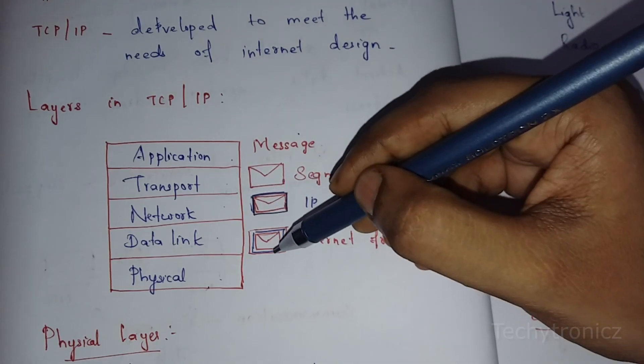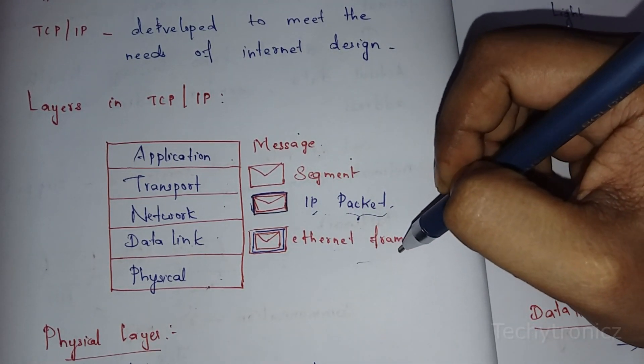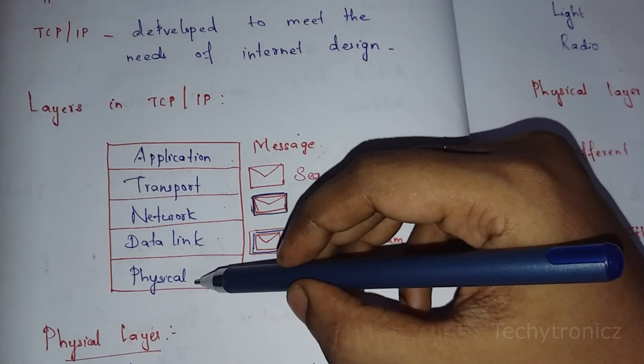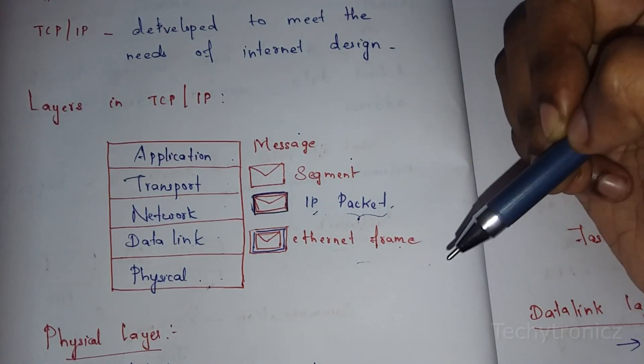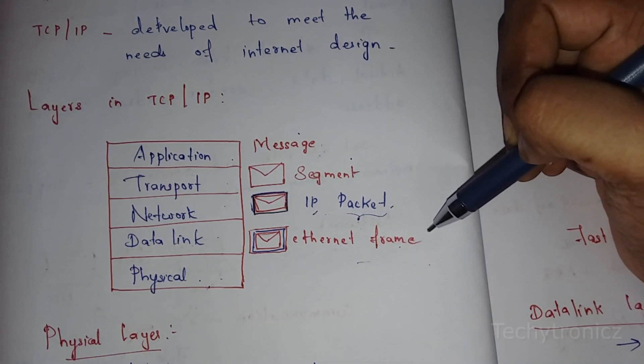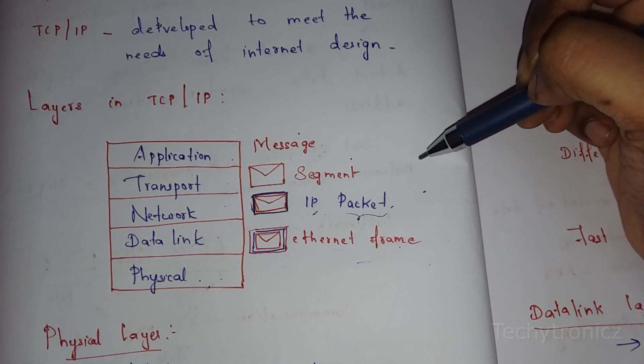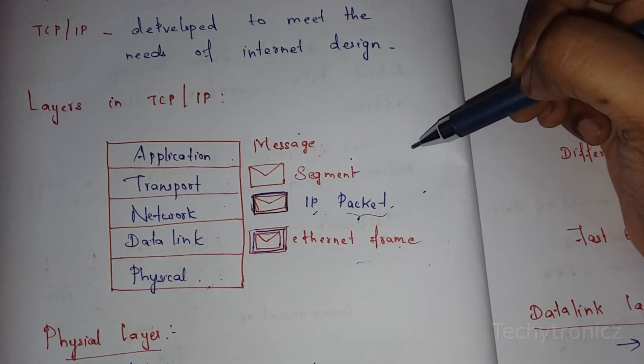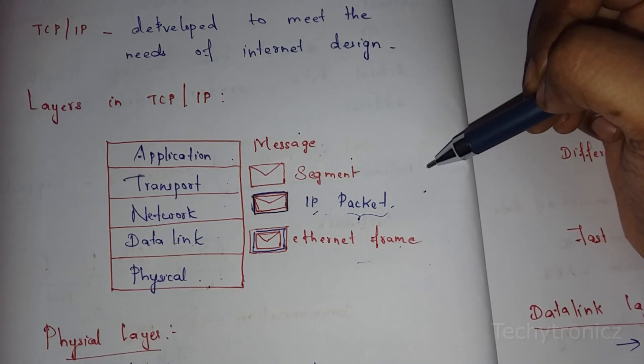The Link Layer adds MAC addresses and a checksum, creating an Ethernet frame. That frame is forwarded to the Physical Layer, which transmits it through the media. On the receiver side, the process reverses: Physical Layer to Data Link Layer, where the frame is converted to a packet through decapsulation. The Network Layer forwards it to the Transport Layer, where the packet is decapsulated into segments. The Transport Layer reassembles the segments into the original message.